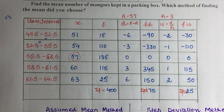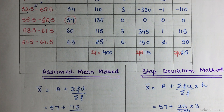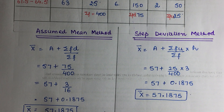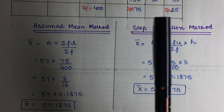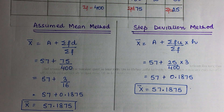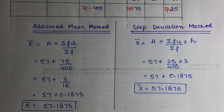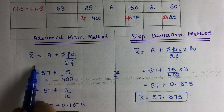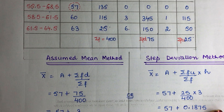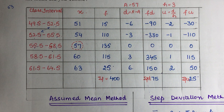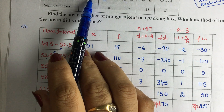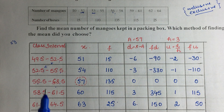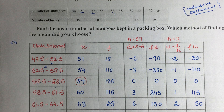Choose whichever method you want — assumed mean or step deviation — whichever is convenient. If you don't want to use step deviation, use assumed mean. The tip for inclusive/exclusive conversion: for the upper boundary, add 0.5; for the lower boundary, subtract 0.5. Then apply the formula as normal.